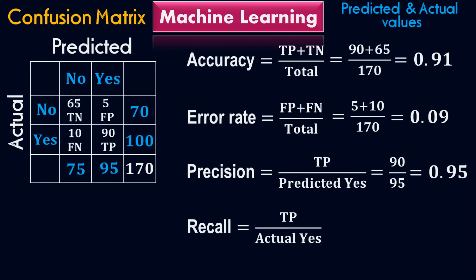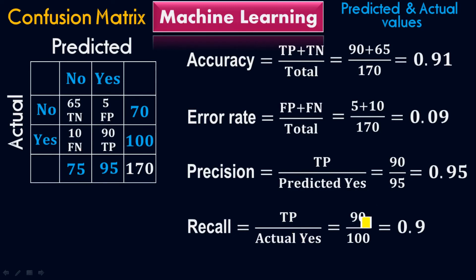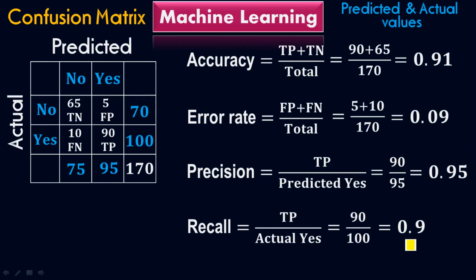To calculate the recall, the formula is true positive all over actual values. Plugging in the values: 90 over 100, it equals 0.9. True positive is 90. For the actual values, we look horizontally — not vertically, but horizontally. The total actual Yes values are 100, because 10 plus 90 equals 100. So 90 over 100 equals 0.9, which is 90%. The recall of this model is 90%.